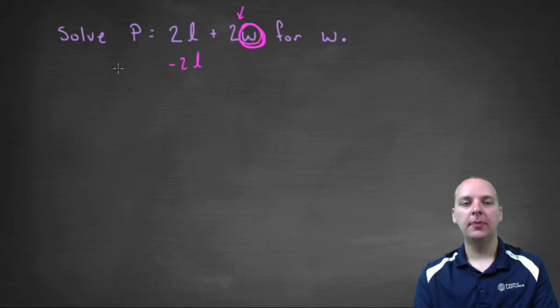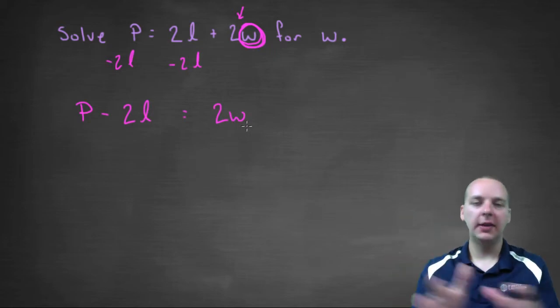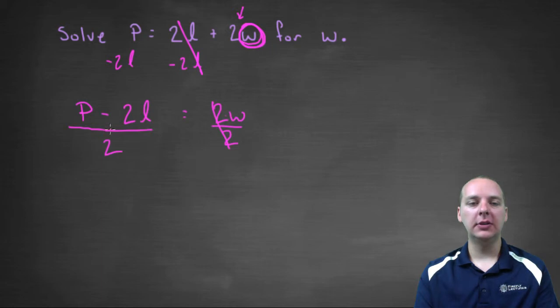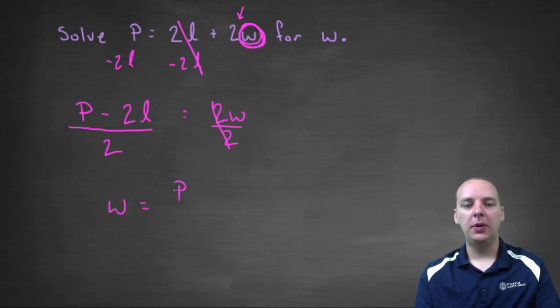So we'll subtract 2L from both sides, and you'll have P minus 2L equals 2W. All we did was take the 2L on the right and subtract it over to the left. On the right-hand side these cancelled, that's why you only have 2W. Now to get W by itself, we're going to divide by two. So those will cancel, and we see W equals P minus 2L over 2.